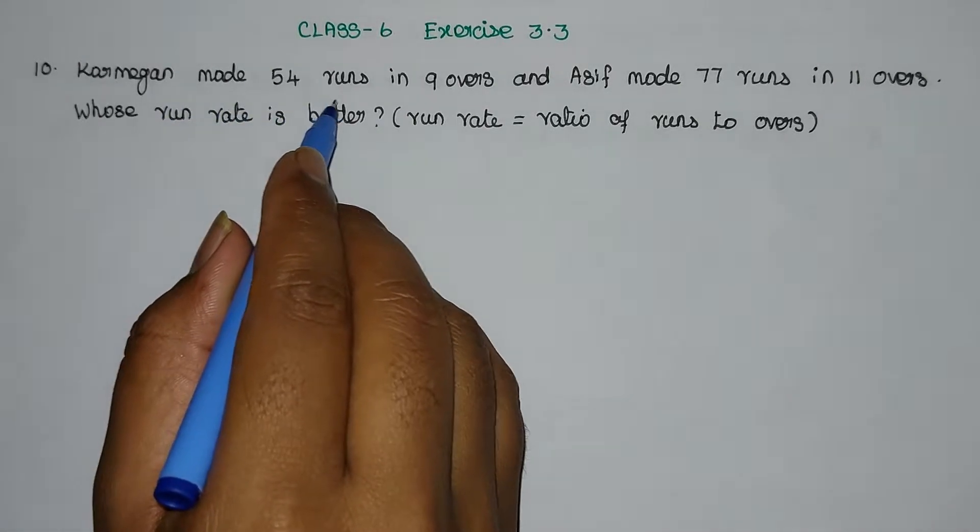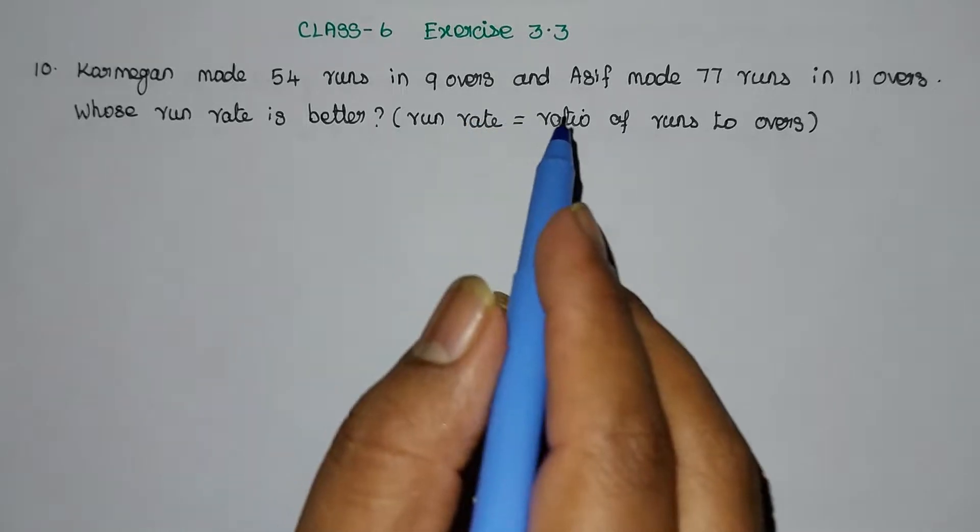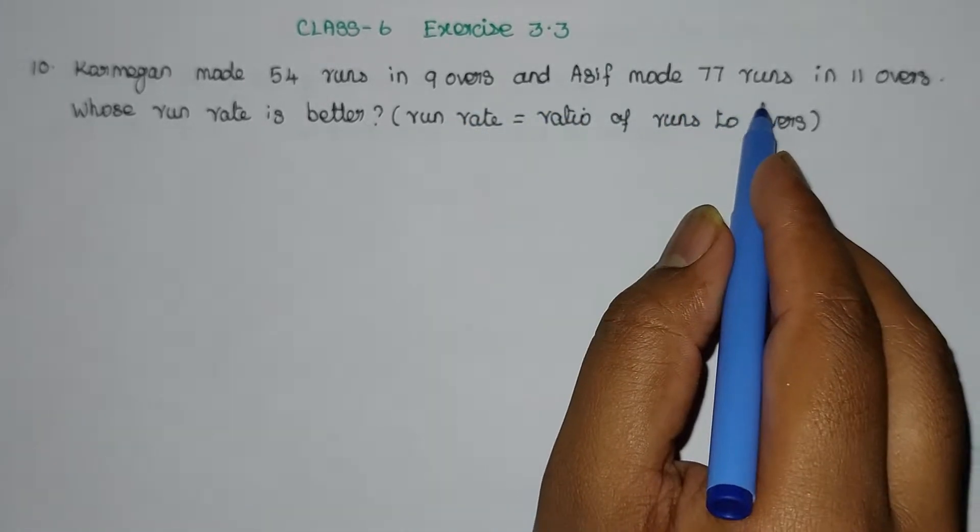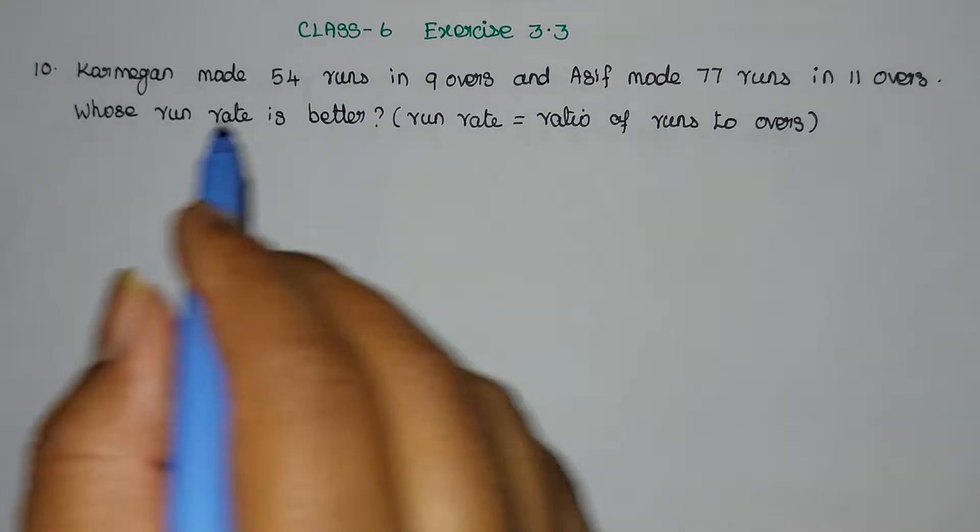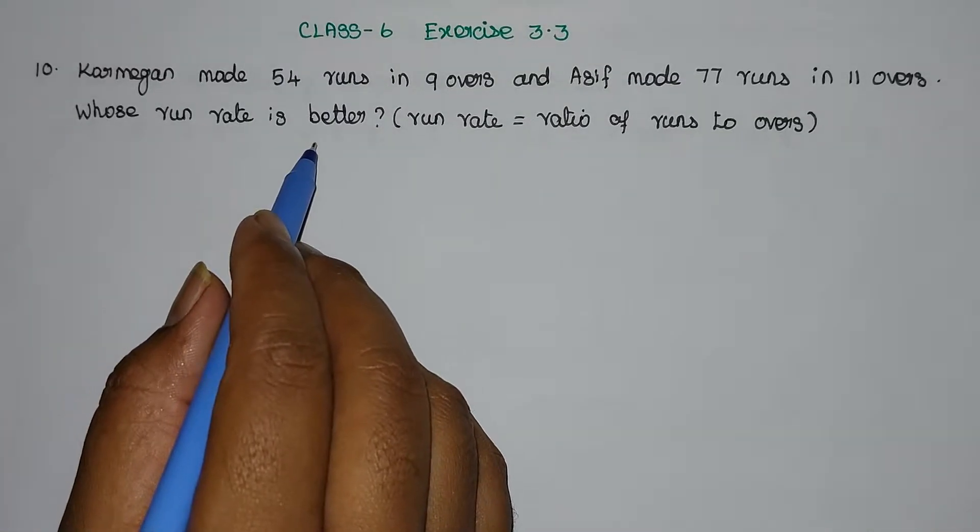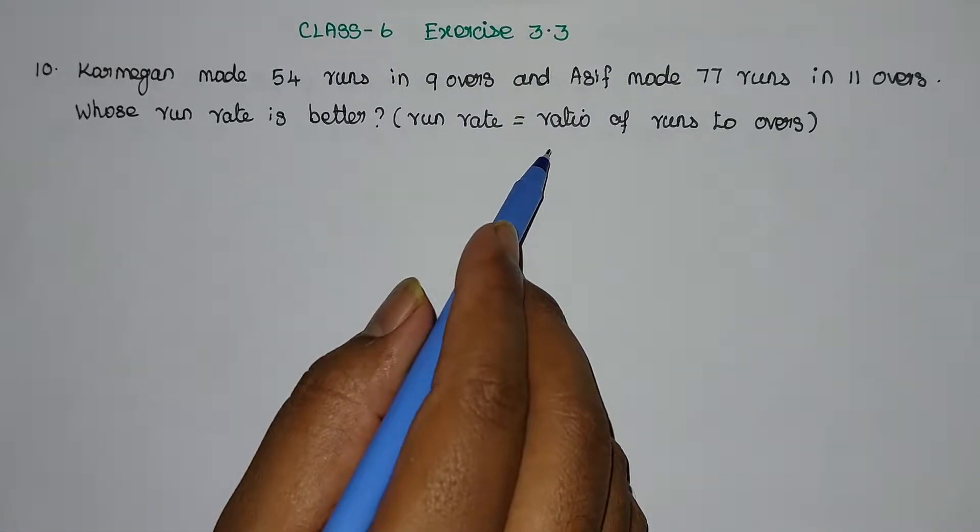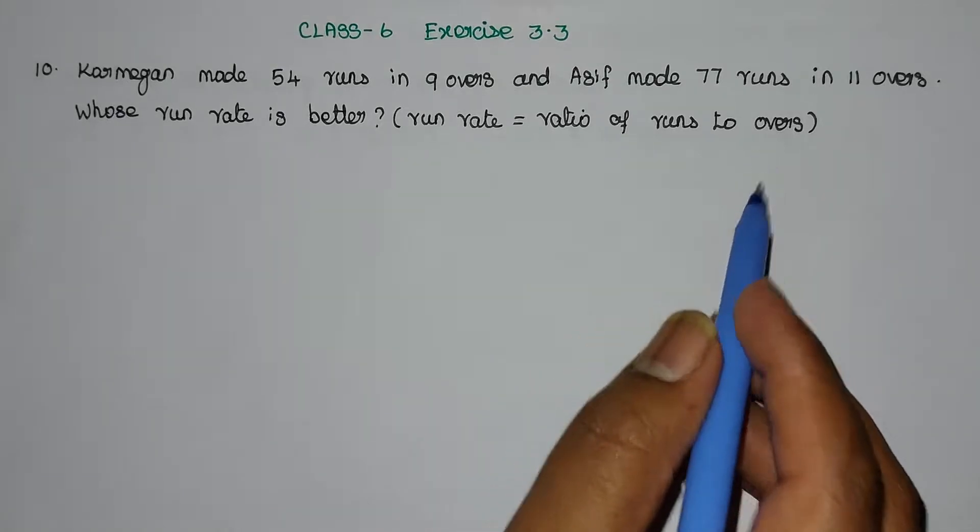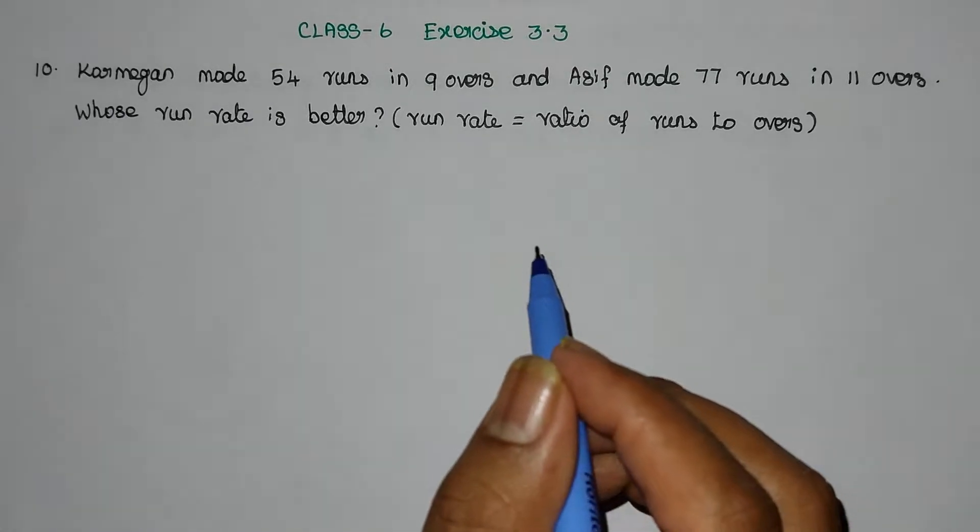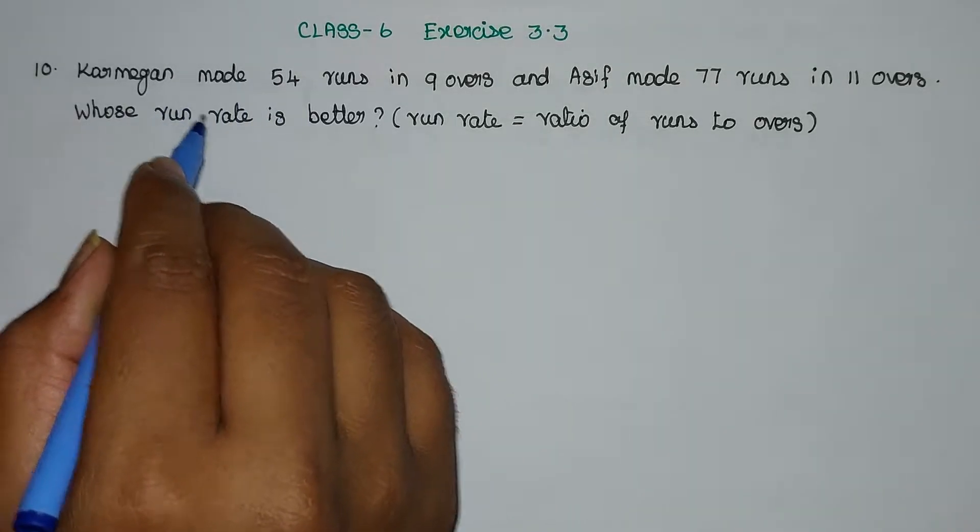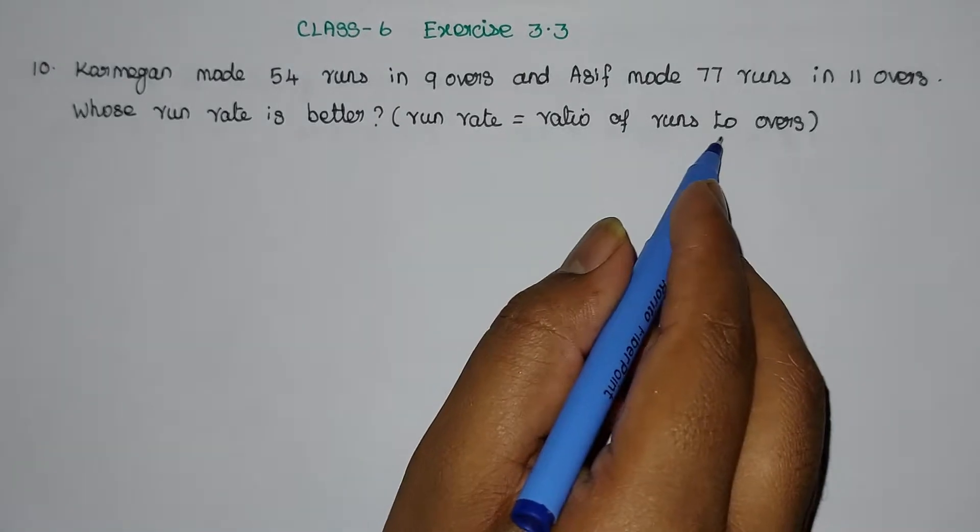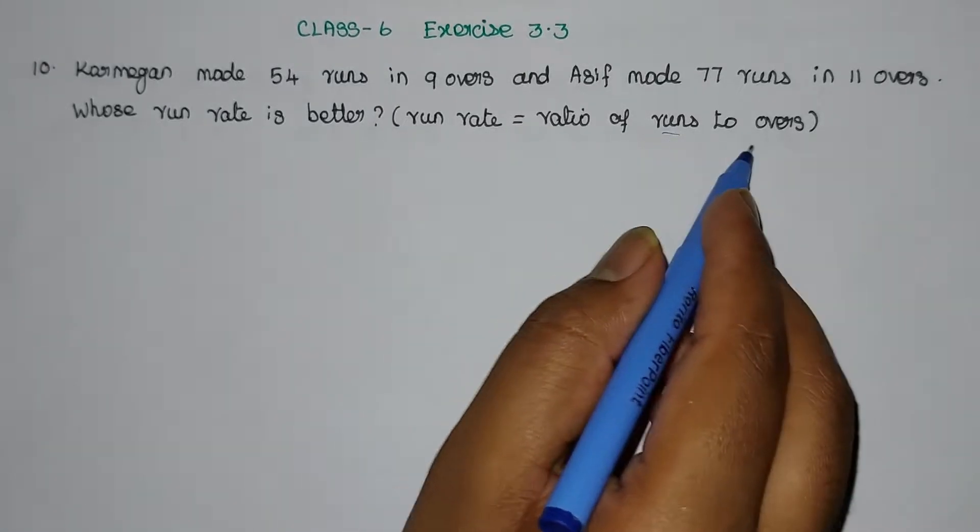Carmagan made 54 runs in 9 overs and Asif made 77 runs in 11 overs. Whose run rate is better? Run rate equals the ratio of runs to overs.